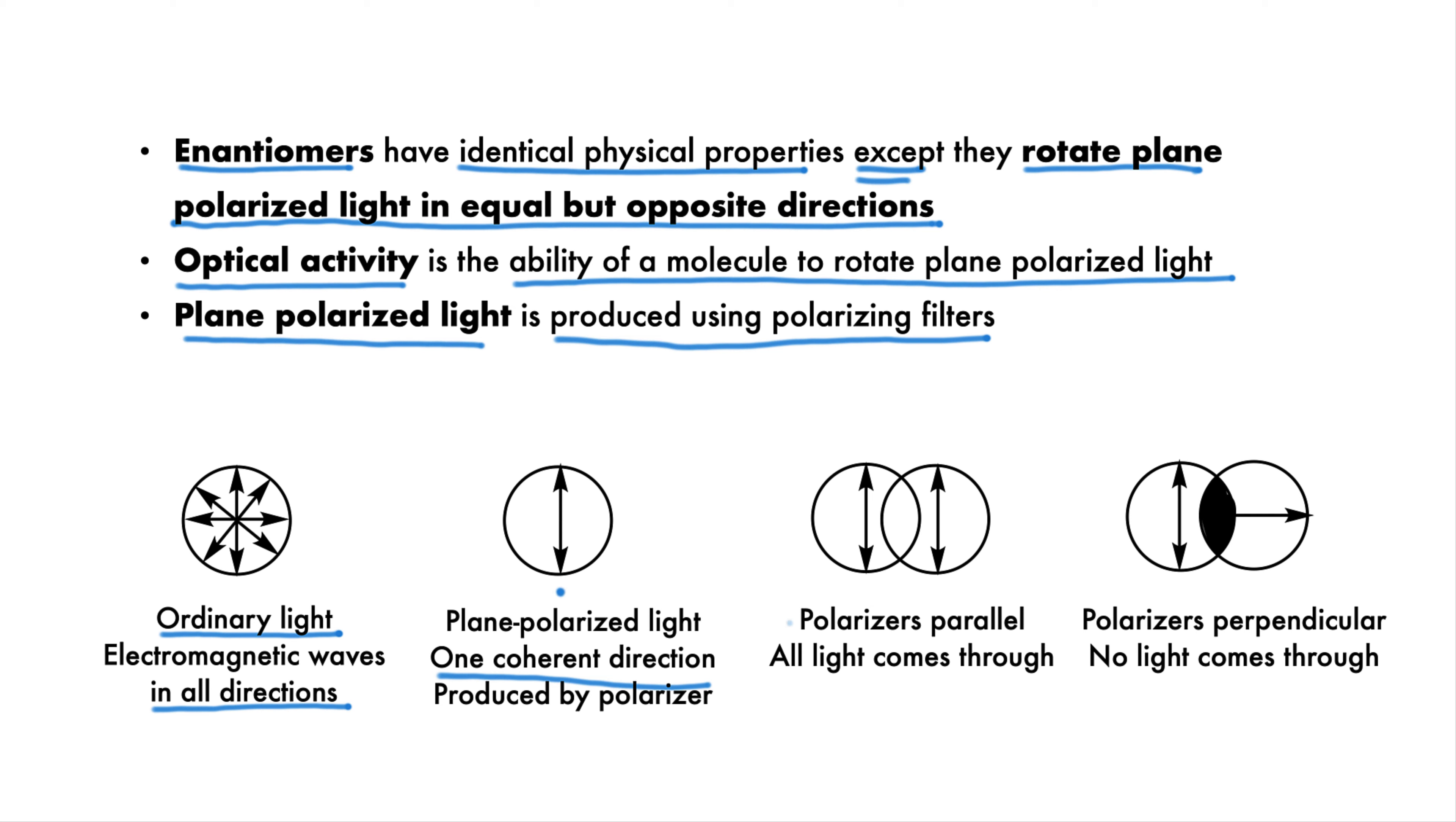If you have two polarizing filters which are exactly aligned, then all of the coherent light is let through the area where they overlap. If the two polarizing filters are exactly perpendicular, then the light comes through the first filter, but is not allowed through the second filter, and no light comes through where they overlap. This area is dark.